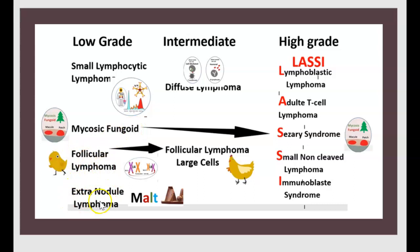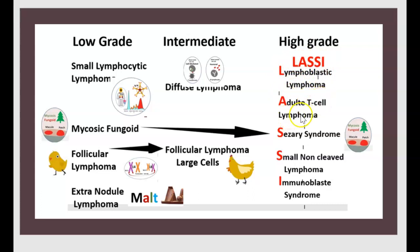Intermediate-grade has two forms: diffuse lymphoma and follicular lymphoma of large cells. High-grade includes LACI, lymphoblastic lymphoma, adult T-cell lymphoma, Sézary syndrome, small non-cleaved lymphoma, and immunoblastic lymphoma.